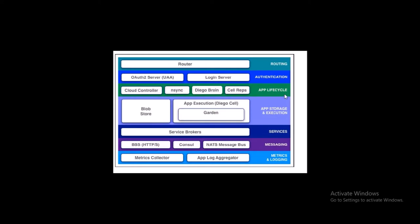Next is Application Lifecycle, which has four components. The first is the Cloud Controller. When you push or deploy an application to Cloud Foundry, you target the Cloud Controller. The Cloud Controller accepts your request and directs it to Diego Brain via the Cloud Controller Bridge to coordinate individual Diego Cells to stage and run your application. The Cloud Controller also maintains records of organizations, spaces, user roles, services, and more.